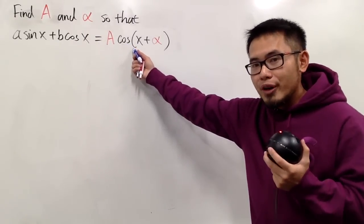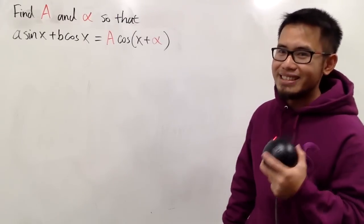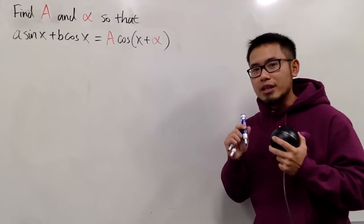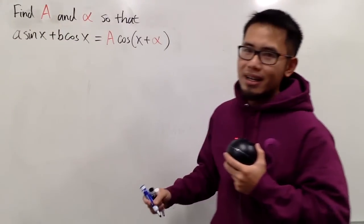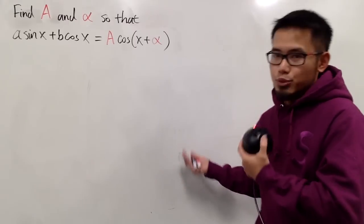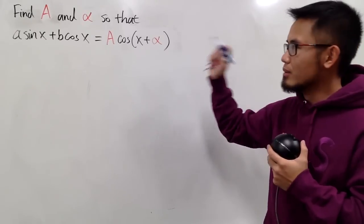And you may be wondering, can we have just a sine function right here? And the answer to that is yes, but I'll leave that to you guys. In this video, I will just show you guys how to find the conditions on the capital A and alpha. And if you want to have a sine right here, the process is really similar, so you can just try it on your own. Anyway, how can we do this?